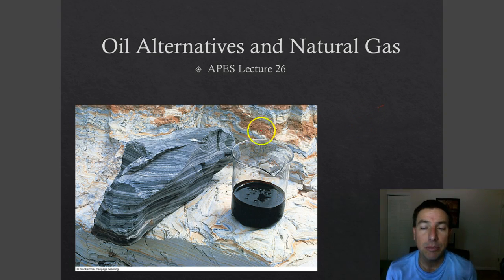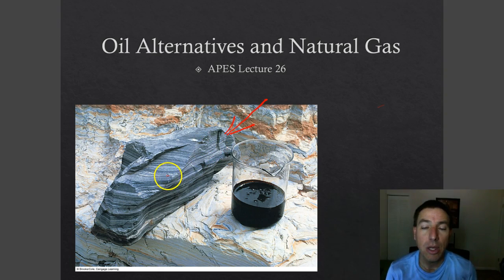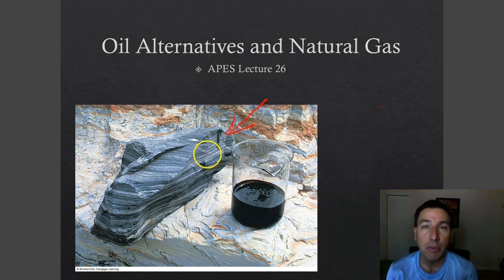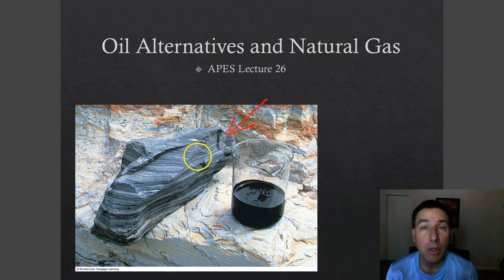If we look at this picture right here, this is a piece of oil shale. Oil shale is a sedimentary rock formed a long time ago by different sediments piling up — mostly types of muds — and in those muds were trapped organisms, or dead remains of organisms. Over time, the heat and pressure of the earth turned those into small deposits of oil or natural gas.